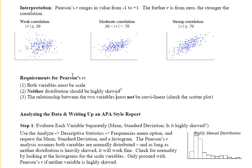Then we discussed the requirements for Pearson's R. Both variables must be scale, that is, equal size intervals. Height has equal size intervals: 1 foot, 2 foot, 3 foot, 4 foot, and so on.